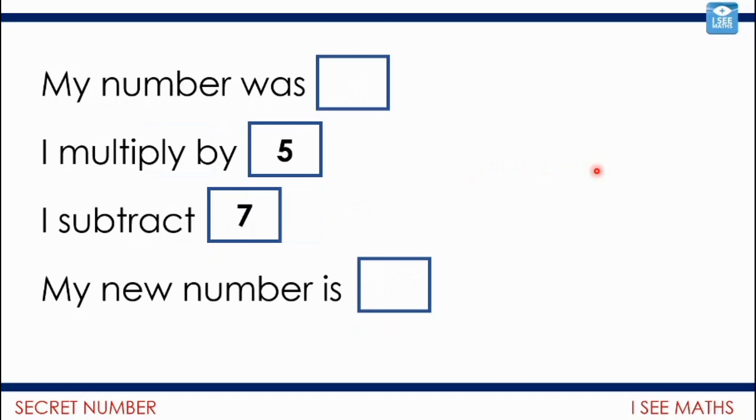So let's see if we can do another take on this question. My number was, and then whatever it was, I multiplied it by 5 and I subtracted 7. What could my new number be? So see if you can come up with again for this one a number of possibilities. Pause the video. Have a go.